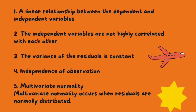The first assumption of multiple linear regression is that there is a linear relationship between the dependent variable and each of the independent variables. The best way to check the linear relationship is to create scatter plots and then visually inspect the scatter plots for linearity.